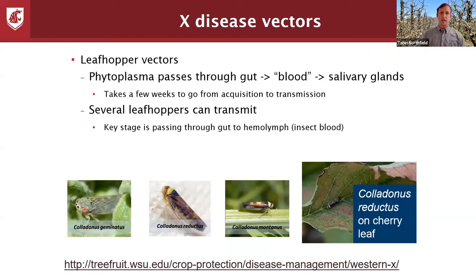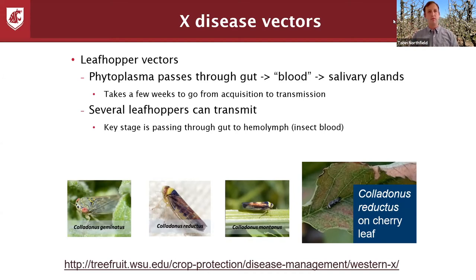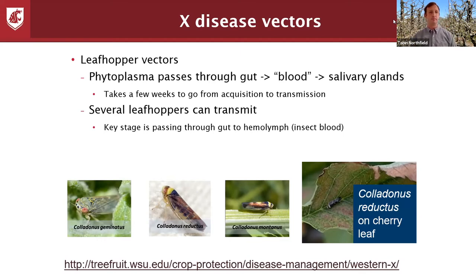One of the key questions I get often is: what makes a leafhopper a vector? Why aren't all leafhoppers vectors? What has to happen is the phytoplasma has to get into the gut of the leafhopper, pass through the hemolymph, and then make it all the way to the salivary glands. That generally takes a few weeks. There are several leafhoppers that can transmit, and often they're fairly closely related.